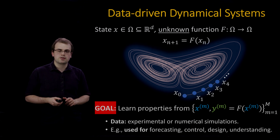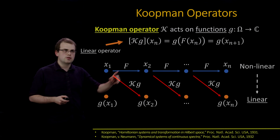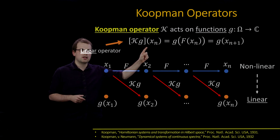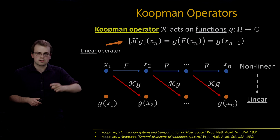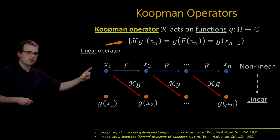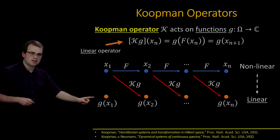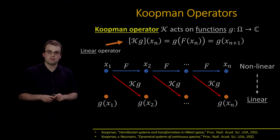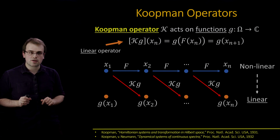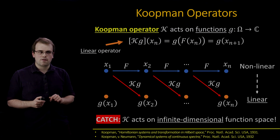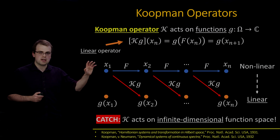We're going to approach this using Koopman operators. The Koopman operator K acts on functions on the state space omega via a composition formula — it looks one time step forward. This composition allows you to show that the Koopman operator is linear. So you've gone from a nonlinear representation in state space to a linear representation in function space. But there is a catch: the Koopman operator acts on an infinite-dimensional function space.